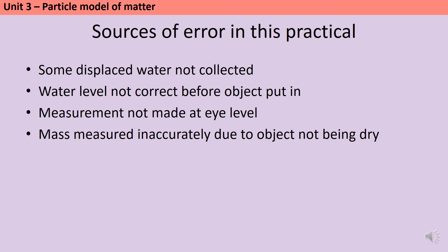You should be aware of some potential sources of error. The can may splash when the object is inserted, meaning some displaced water isn't collected in the measuring cylinder, leading you to underestimate the volume. If measuring multiple objects, the water level might not be right up to the spout before you start, so it's important each time to completely fill the can until water comes out to ensure it's level with the spout. If you don't hold the measuring cylinder at eye level and read from the meniscus, that can also cause inaccuracy. Finally, if you measured volume before mass and didn't dry the object properly, you'd end up measuring a heavier mass than the true mass of the object.